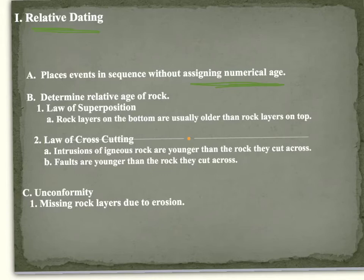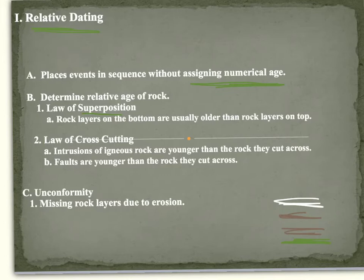There are a couple of laws that we use. There's the law of superposition, meaning the rocks that are at the bottom are older than rock layers at the top. So in this case, the white rocks would be the youngest because they were deposited last.